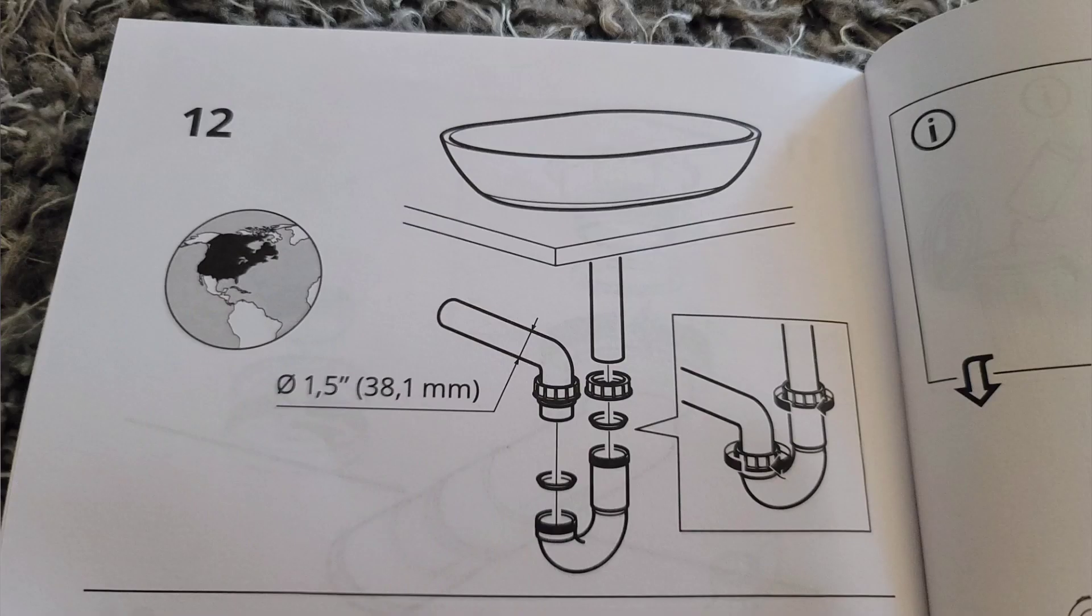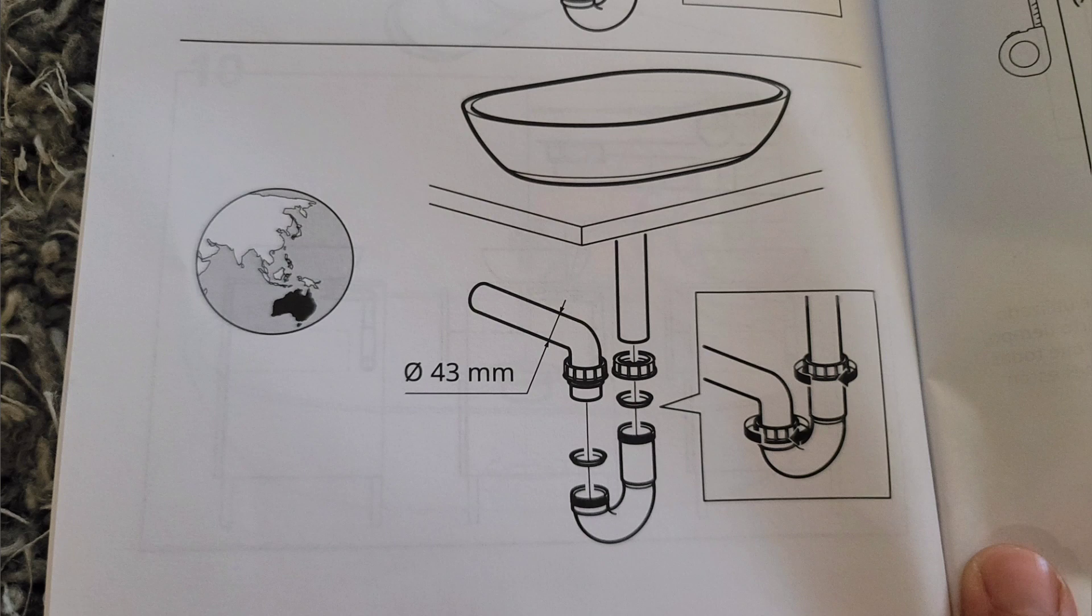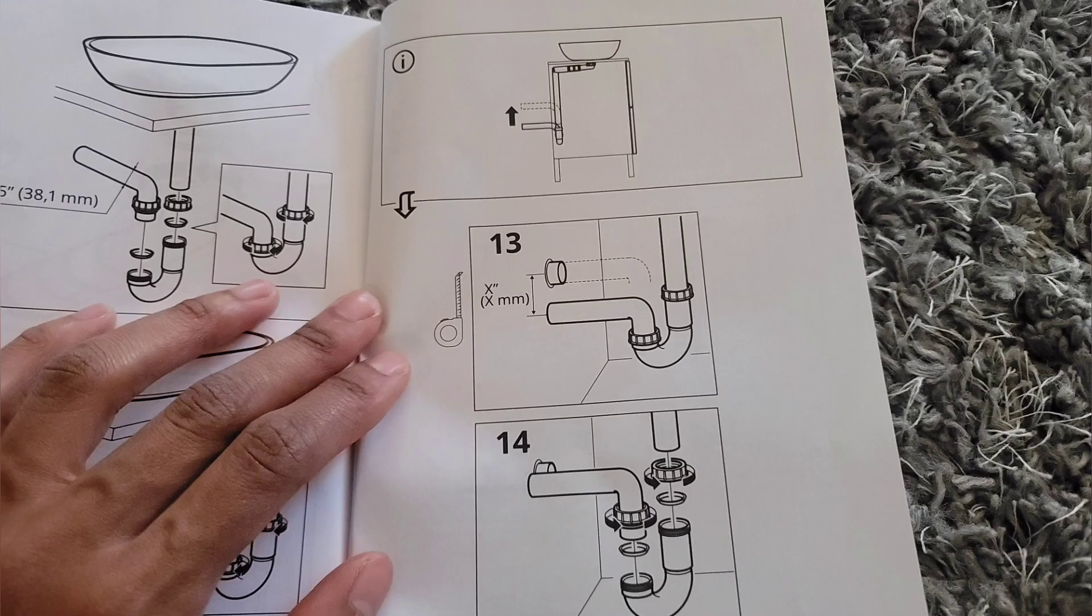Step twelve is saying that in North America, we are using one and a half inch wide pipes. But, in places like the Southern Hemisphere, Australia, you're using 43 millimeters. So, it's just alerting you of the differences in size to prepare if you need to adjust the pipe to your house's old pipe.